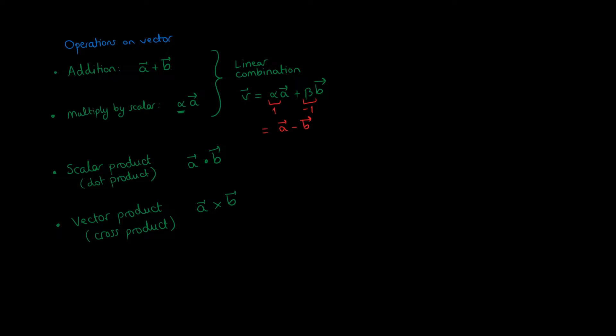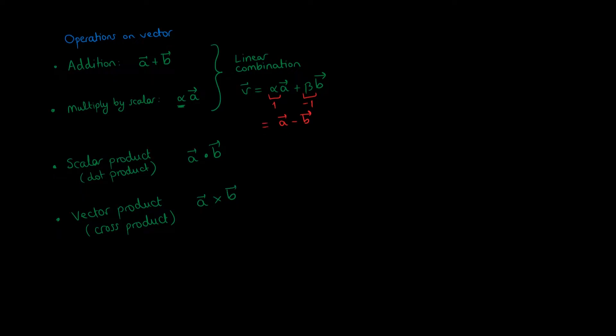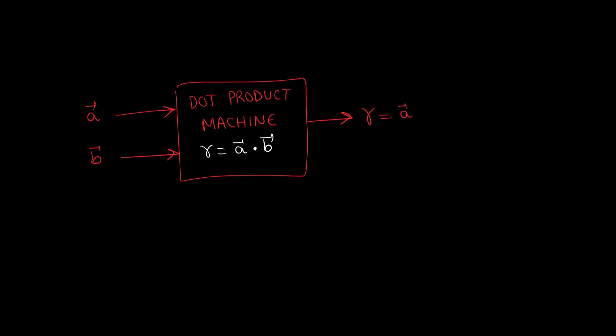These two are very different. Let's start with the dot product. Let's imagine the dot product as a machine that has for input two vectors and it outputs a number equal to the dot product of a dot b. This number is defined to be equal to the magnitude of a times the magnitude of b times the cosine of the angle between a and b.